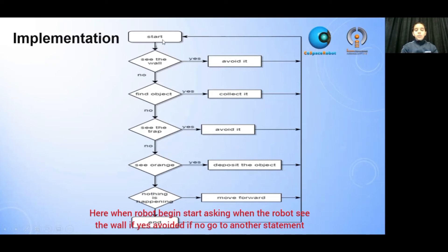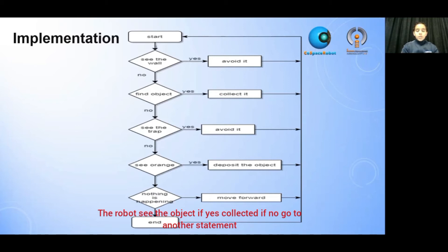When the robot begins, it starts asking if the robot sees the wall. If yes, then avoid it. If no, we go to the other statement. The robot sees the object. If yes, collect it. If no, go to the other statement.